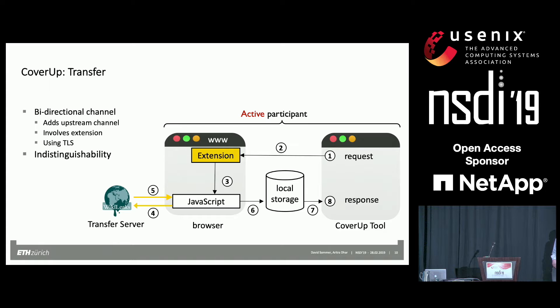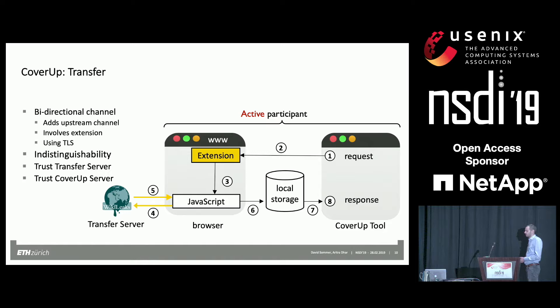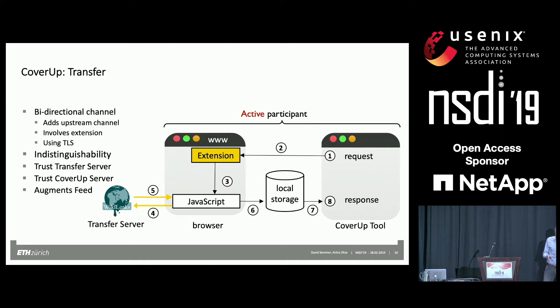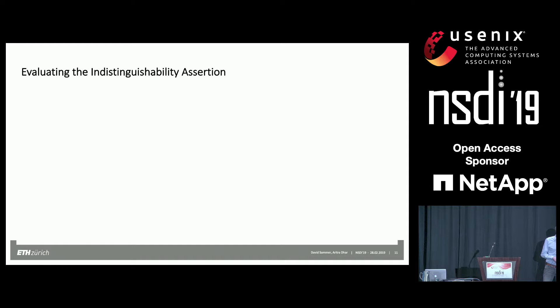The JavaScript puts information to local storage and it is assembled by the Cover-Up tool. The difference now is that we have to trust the transfer server, because it obviously knows who is an active and who is a passive participant. We also trust the Cover-Up server because we need to trust the JavaScript snippet running on the user's machine — checking it byte by byte when loaded would induce a lot of timing leakage. We want to emphasize that transfer augments the feed and can run in parallel. If the feed also uses TLS, feed and transfer are indistinguishable.